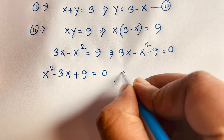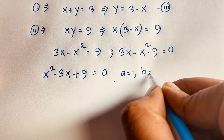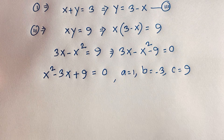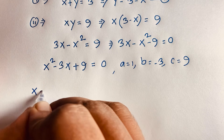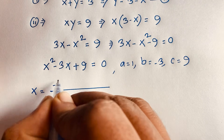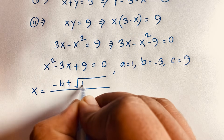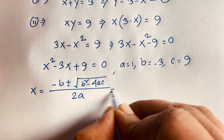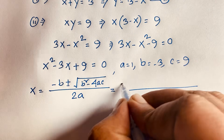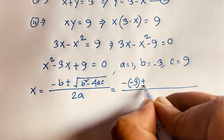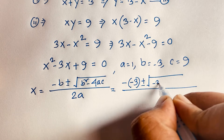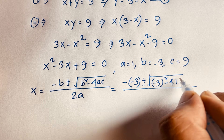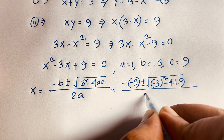From this quadratic, we identify a is equal to 1, b is equal to negative 3, and c is equal to 9. Using the quadratic formula: x equals negative b plus or minus the square root of b squared minus 4ac, all over 2a. Substituting: minus b is positive 3, plus or minus square root of negative 3 squared minus 4 times 1 times 9, over 2 times 1.